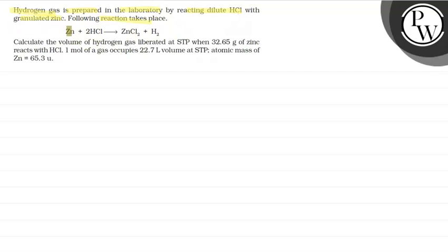Following reaction takes place: Zn + 2HCl → ZnCl2 + H2. Calculate the volume of hydrogen gas liberated at STP when 32.65 gram of zinc reacts with HCl. 1 mole of gas occupies 22.7 liter volume at STP and the atomic mass of Zn is 65.3U.